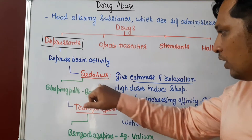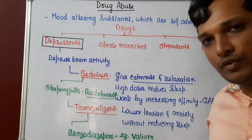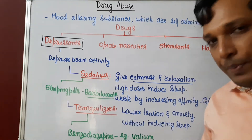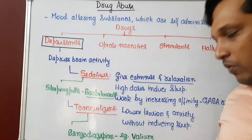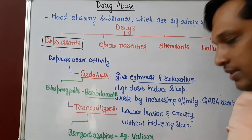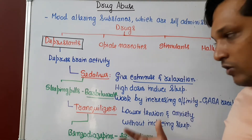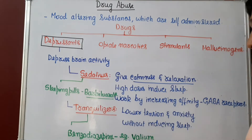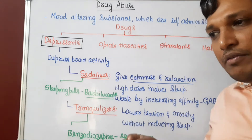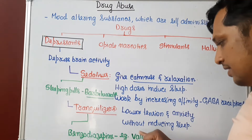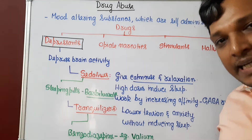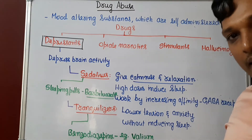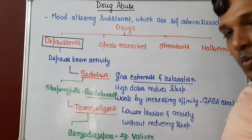What are the examples for sedatives? Barbiturates are commonly used in sleeping pills because they induce sleep. What are tranquilizers? Tranquilizers are also depressants. They lower tension and anxiety but are given in low dosages; hence they won't induce sleep. An example is benzodiazepine — for instance, Valium.